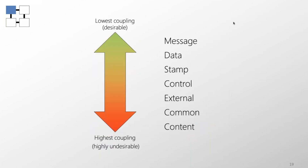Coupling is normally given as a spectrum, not an absolute number. Less desirable coupling means less flexibility, less extensibility, and more difficulty maintaining the system — less tolerant to change. Systems with lower coupling tend to be more flexible, more extensible, easier to maintain, and more tolerant to change. We desire the lowest possible coupling we can achieve while still delivering our functionality.